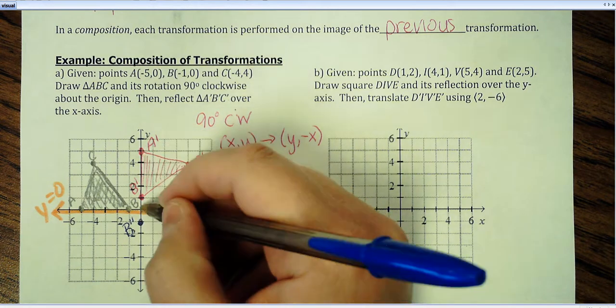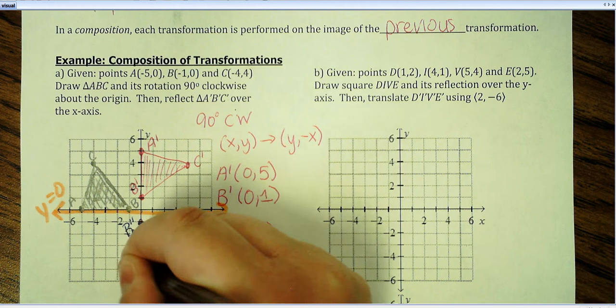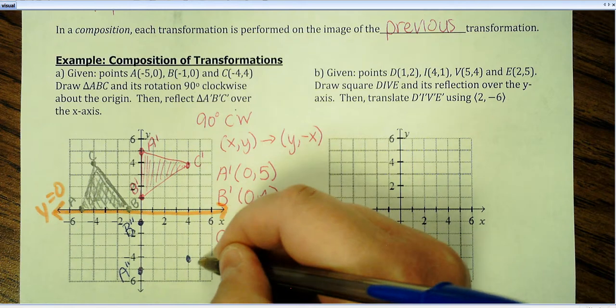So here, A prime, five spots away, so come five spots away from your reflection line down here, A double prime. C, four spots away, down the same line, four spots away. C double prime.